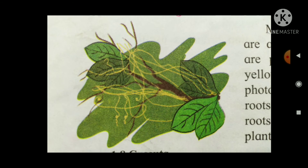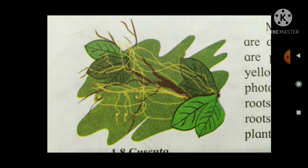This plant is leafless and cannot perform photosynthesis. It has a sucking root. The sucking root absorbs nutrients from the host plant. This root penetrates into the conducting vessel of the host plant to absorb water and food.